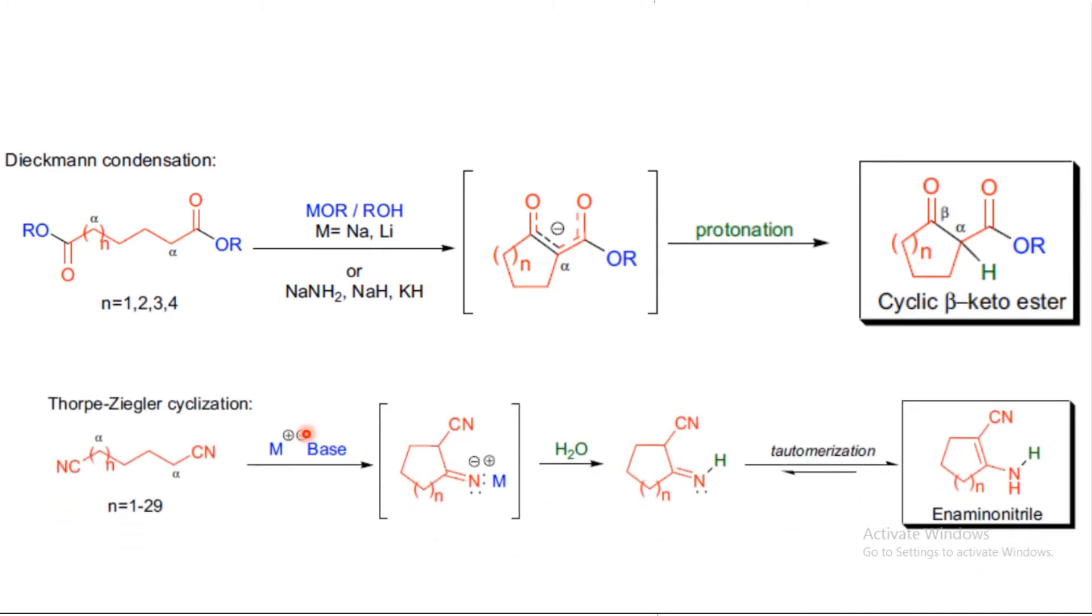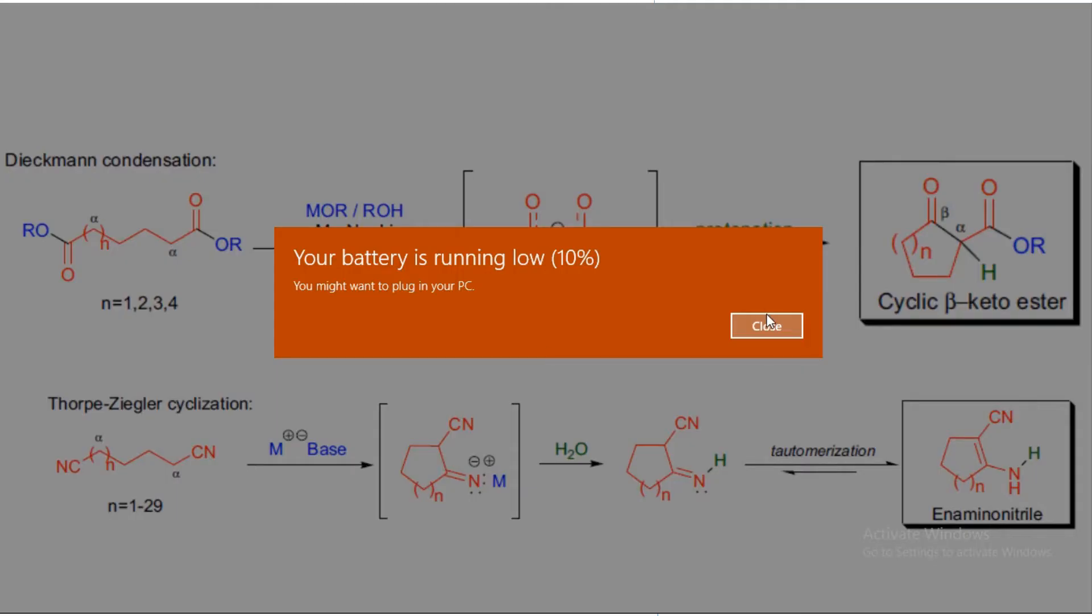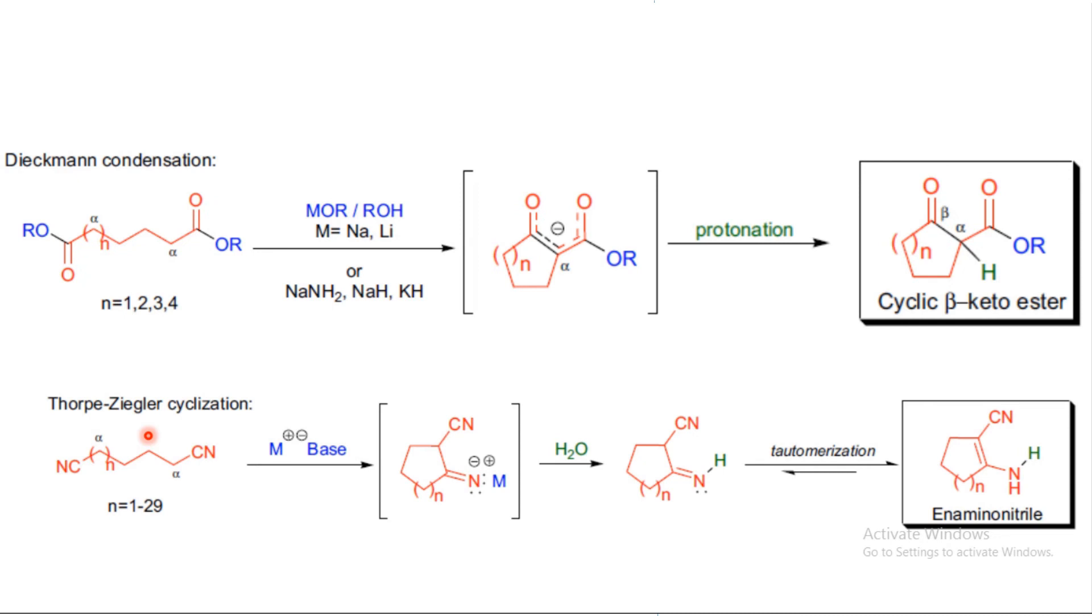This is another extension: the Thorpe-Ziegler cyclization, which occurs in the presence of base to get an iminonitrile. This is one extension of the Dieckmann condensation.